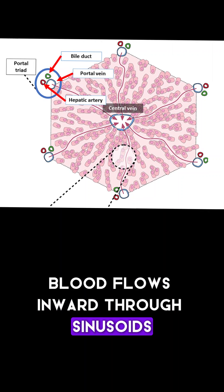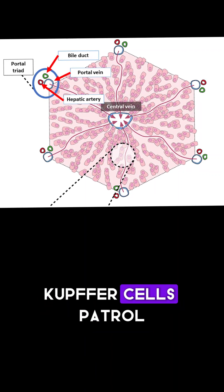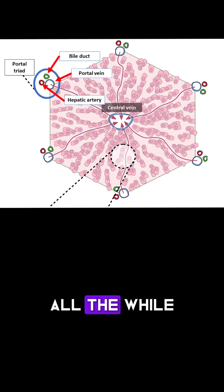Blood flows inward through sinusoids, Kupffer cells patrol all the while.